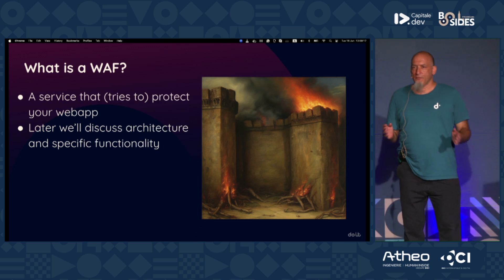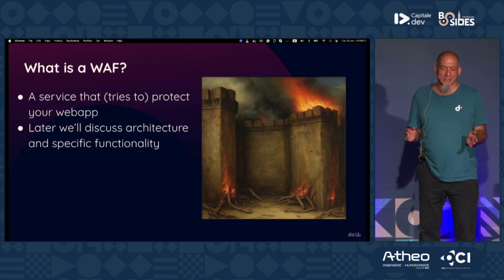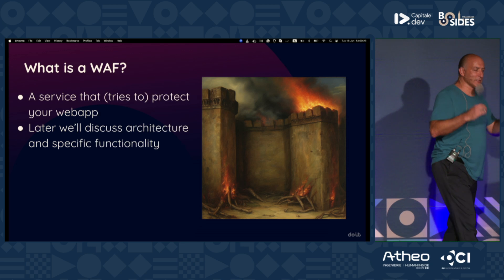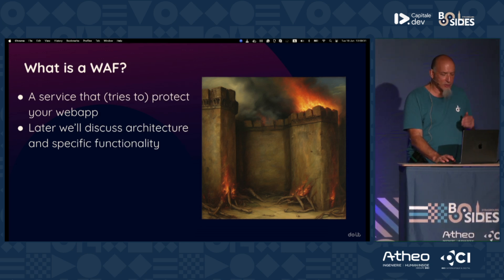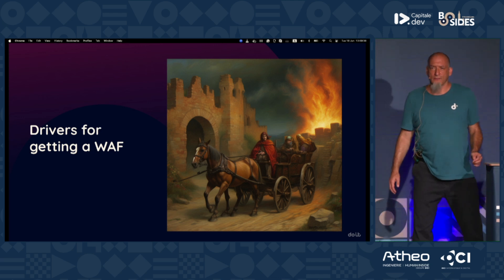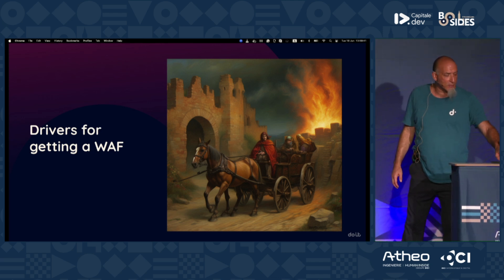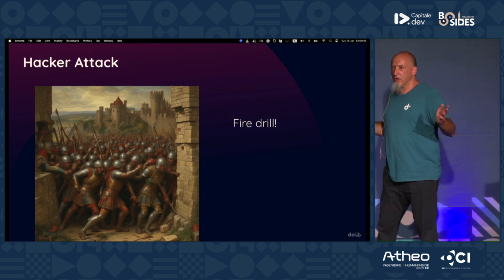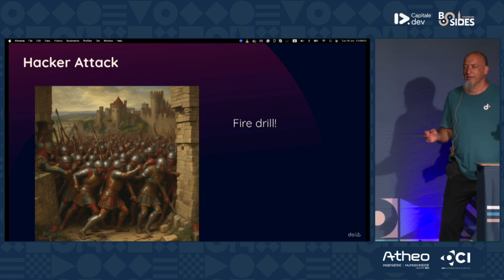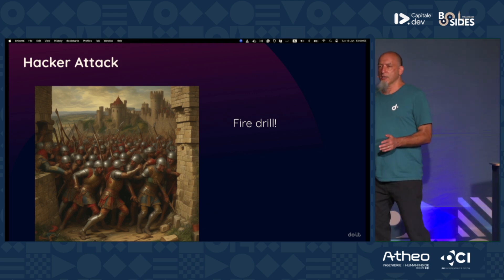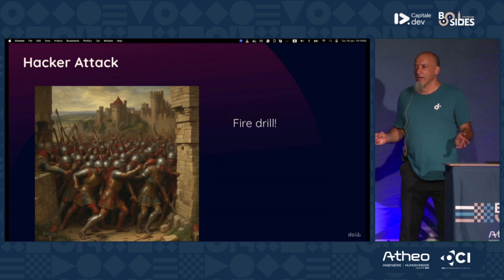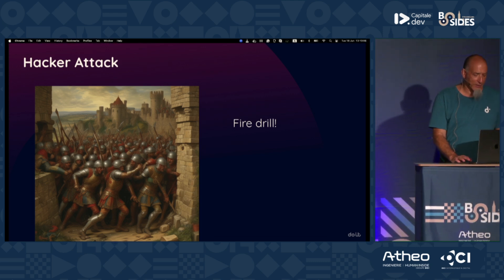What is a WAF? A WAF is a service that tries to protect your web application. It stands in front of your web application logically and blocks various types of attacks. Why do companies choose a WAF? One driver is a hacker attack — oh no, there's a hacker, we see it in the logs, somebody's trying to get in, somebody did get in. Fire drill — everybody runs around screaming. What do you do in such a situation? You get a WAF. You pay to have protection to try to keep those hackers out, even though they may already be in.